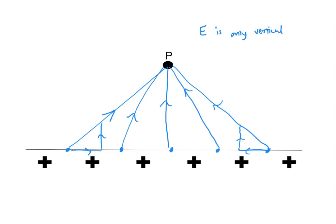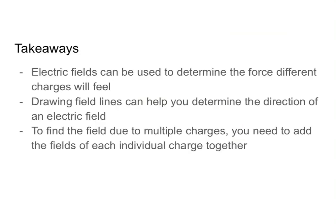So, we have no horizontal components whatsoever. So, let's talk about takeaways. First of all, our first two takeaways you might recognize from the previous video, because again, we learned that electric fields can be used to determine the force different charges will feel. And we also reiterated the importance of using field lines to help you determine the direction of an electric field. In this video, you also learned that to find the field due to multiple charges, you need to add the fields of each individual charge together, keeping in mind the direction of those field lines at the point in space in which you are trying to find the field, since electric fields are vector quantities.